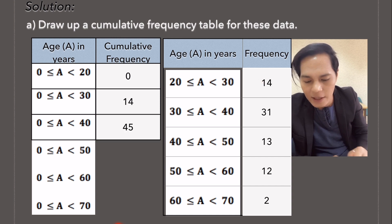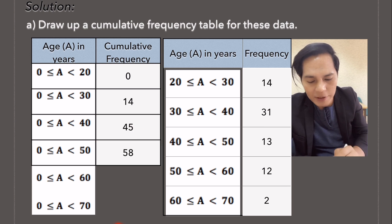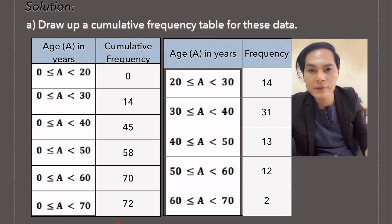And then next here is 45 because 14 plus 31 is 45. 45 plus 13 is 58. 58 plus 12 is 70. 70 plus 2 is 72. And yes, the total here is equal to 72.